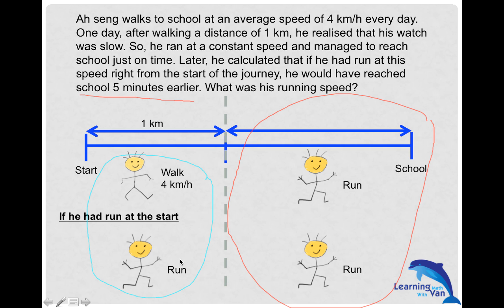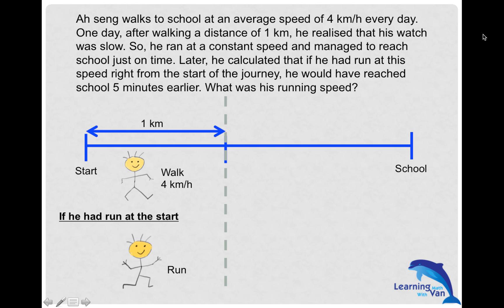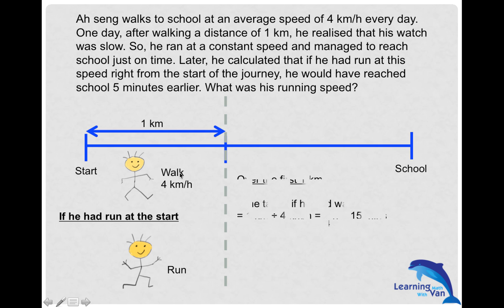So let's move on to solve this. The first one kilometer is the key difference — in the first scenario he walked, in the second scenario he ran. What is the time taken to walk? We have the distance and the speed, so applying the formula: time equals distance divided by speed, which gives one quarter hour, which is 15 minutes. We're told he would reach school five minutes earlier, so those five minutes must come from here — confirming that the rest of the journey takes the same time in both scenarios.